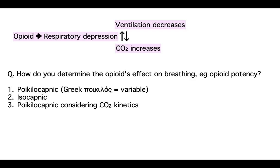CO2 is clamped. There's no confounding effect of changes in CO2 on ventilation — you just look at the effect of the opioid on the organs and brain. But you can also combine it — you can look at planning studies in which you just let CO2 increase, but consider O2 and CO2 kinetics to account for the effect of CO2 as well.